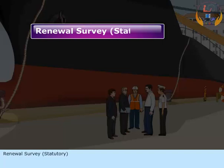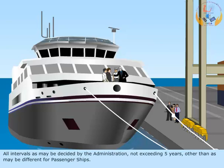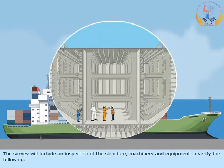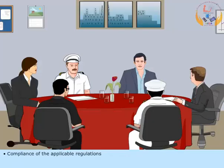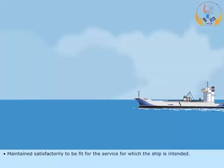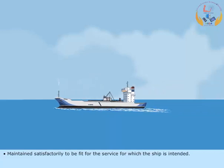Renewal survey, statutory. At intervals as may be decided by the administration, not exceeding 5 years, other than as may be different for passenger ships. The survey will include an inspection of the structure, machinery and equipment to verify compliance with the applicable regulations and that they have been maintained satisfactorily to be fit for the service for which the ship is intended.